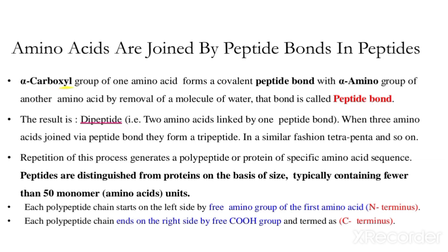When the carboxyl group of the first amino acid and the amino group of the second amino acid join together, they form a peptide bond, which is covalent in nature. As a result of their joining, one water molecule is released through the process of condensation. The bond formed is a peptide bond and the result is a dipeptide, if two amino acids join via one peptide bond.